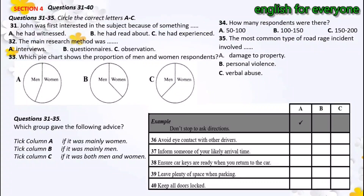So, what strategies had people developed to ensure their own safety? Well, first of all, it was quite striking that there were often distinct answers from the men and women. It was mainly women, for example, who said one shouldn't ever stop to find out how to get somewhere. Whereas it was men who said you should try to avoid looking directly at other drivers. It was women who said you had to tell someone when you were due to get to a particular destination. Both sexes made the point that it's much safer to get keys out well in advance as you go towards your car. Men were very aware that muggers might be concealed behind the car. They also made the point that you should leave plenty of room when you park your car, so you can make a quick getaway if you need to.